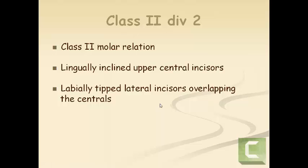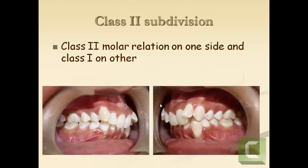In class 2 division 2, the molar relationship is similar to class 2 division 1, but instead of proclined anteriors, the upper central incisors are lingually or palatally inclined, and the lateral incisors then overlap the central incisors. In this example, both the central and lateral incisors are palatally tipped and the canines overlap the lateral incisors.